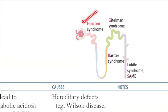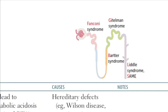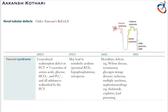The different kinds of renal tubular defects are Fanconi syndrome, Bartter syndrome, Gitelman syndrome, Liddle syndrome, and SAME, which I'll come to in some time. The first syndrome we talk about is Fanconi syndrome.